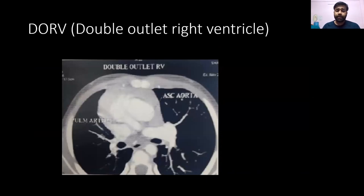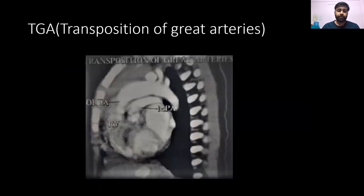Double outlet right ventricle (DORV) is characterized by origin of both the pulmonary trunk and ascending aorta from the morphological right ventricle, and it is almost always associated with VSD.